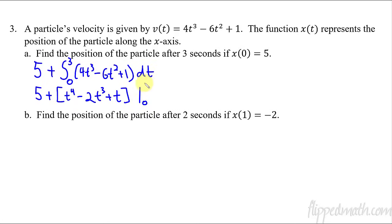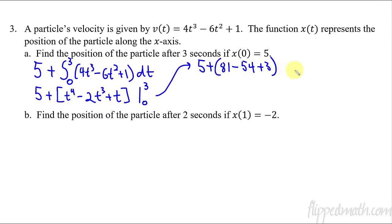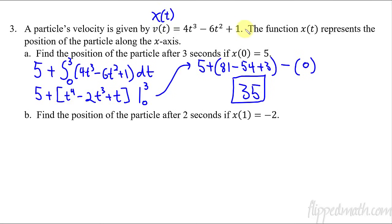So we've got the net displacement over those three seconds. Let's take the antiderivative of this, evaluating from zero to three. So 5 plus — plug in the 3: 3 to the 4th power is 81, minus 3 to the 3rd power is 27 times 2 is 54, plus 3. Then subtract — plug in 0, so you get 0 minus 0. 81 minus 54 plus 3 is 30... 35. So after three seconds, the position is at 35. You also could have found the original x of t function by taking the integral, plugging in 0, setting it equal to 5, finding c, and then plugging in t equals 3. That would also work, but often this is a faster way.